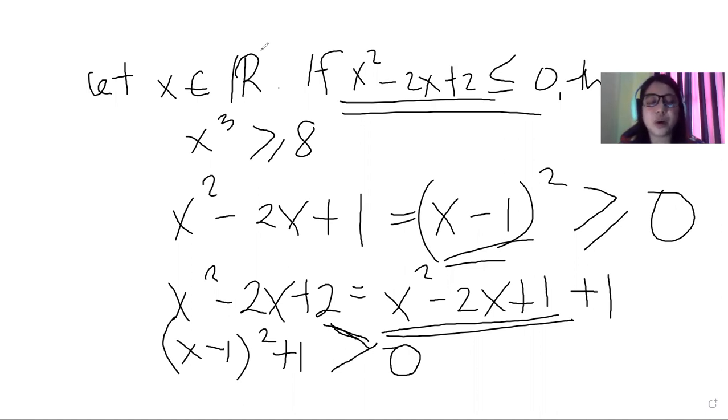So the square of (x - 1) plus 1 is always greater than 0.